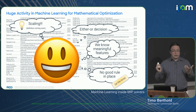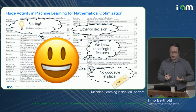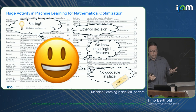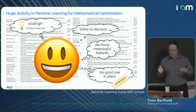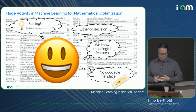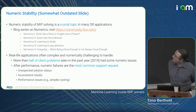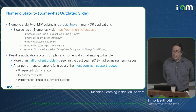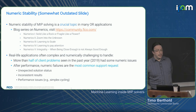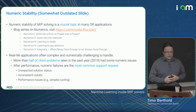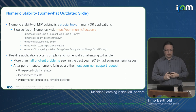Scaling came to mind as a perfect choice — if ML works on anything, it would be scaling. First, we have an either-or decision here, not trying to predict which variable to branch on. We have some very meaningful features, and at that point, there was no good rule in place. The motivation is numeric stability — a very crucial topic in MIP solving. Real-life applications are numerically challenging; there are a lot of big-M constraints, for example, that can lead to trouble.